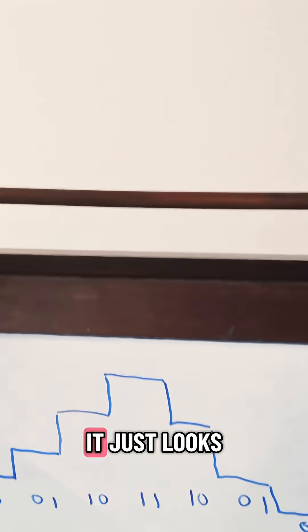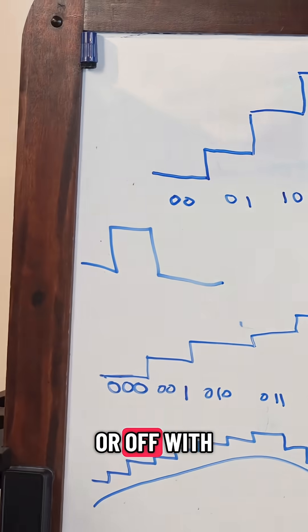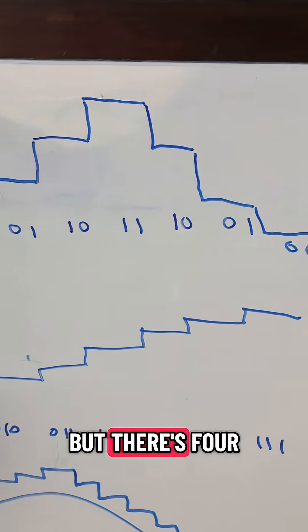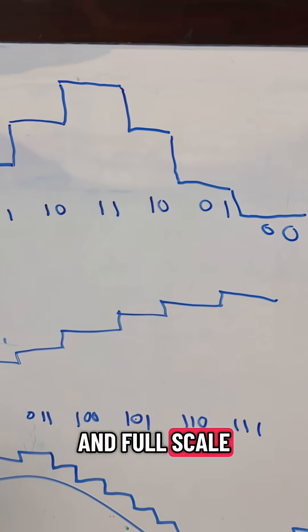Remember, one bit just looks like this. That's no dynamic range. It's either on or off. With two bits, we have more resolution. It's not very good, but there's four steps between off and full scale on.